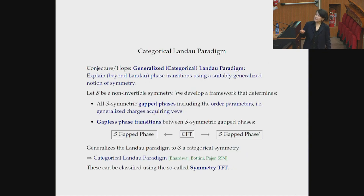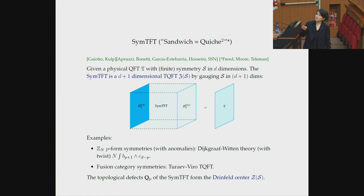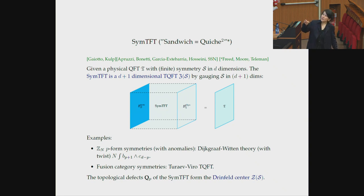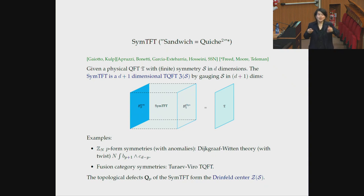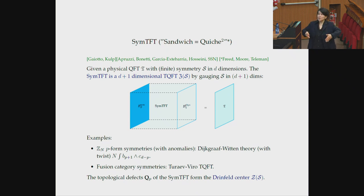One essential piece in this systematic framework is the so-called symmetry TFT (SymTFT). It's known in the math literature in the context of derived Verlinde theories and two-dimensional theories. It's a three-dimensional topological field theory. Given a quantum field theory with some finite symmetry S, the symmetry TFT corresponds to gauging that symmetry not in D dimensions but in D+1 dimensions. The statement is: if you put the SymTFT into a configuration with an interval with certain boundary conditions, you will get back after interval compactification the original theory T.